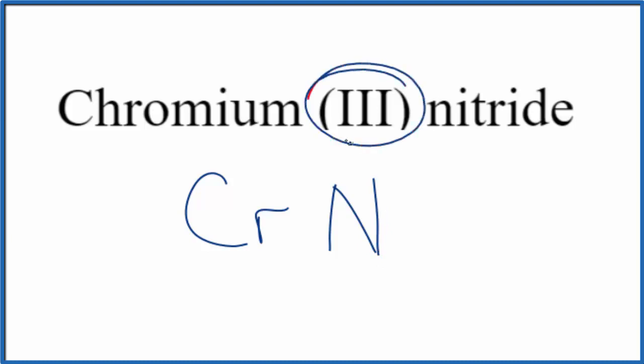When we look at the name, this Roman numeral 3 tells us that chromium is a transition metal. We need to think about the charge when we write the formula. Roman numeral 3 means the charge is 3+.